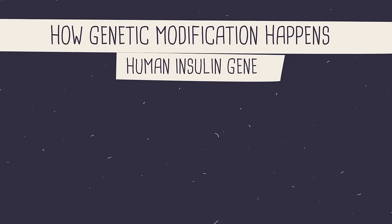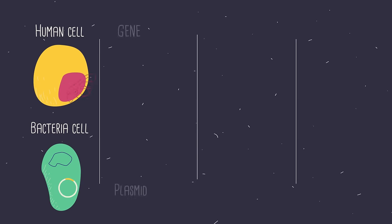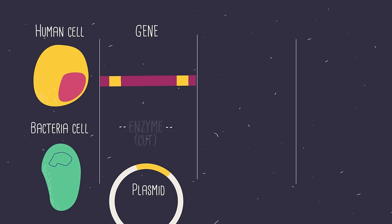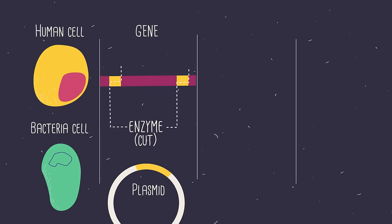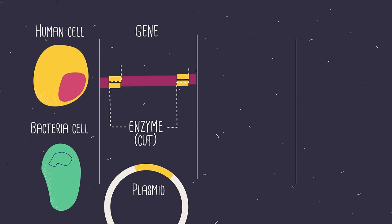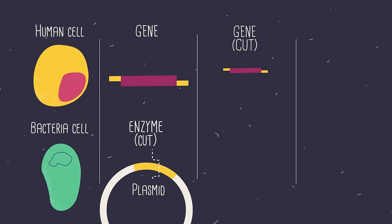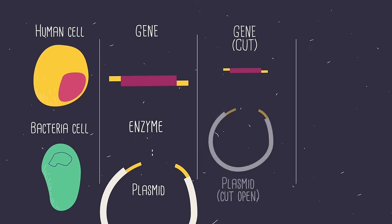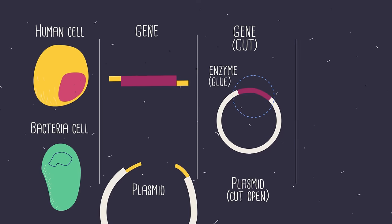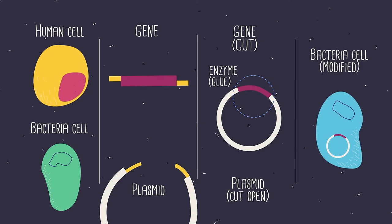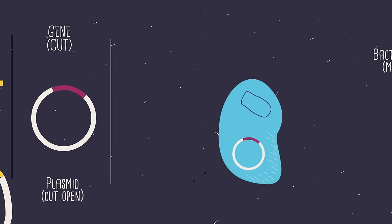Let's go through the steps using the human insulin gene as an example. First, we cut the gene for human insulin from a human cell using an enzyme. We then use the same enzyme to cut the circular bacterial plasmid open and stick the insulin gene and the plasmid together. Then we put the modified plasmid back into a bacterial cell, and we wait.